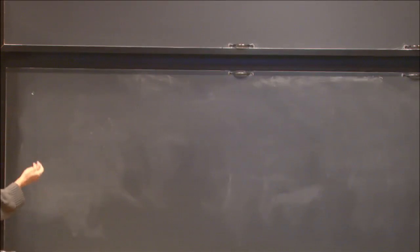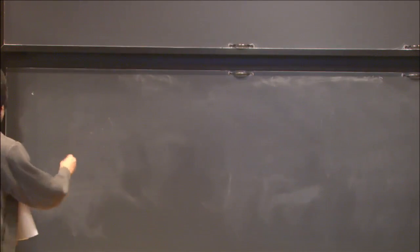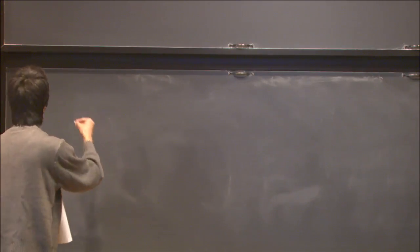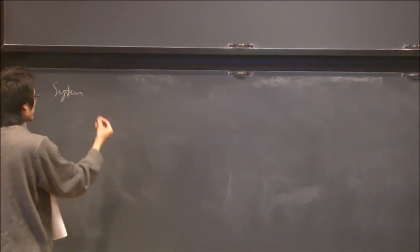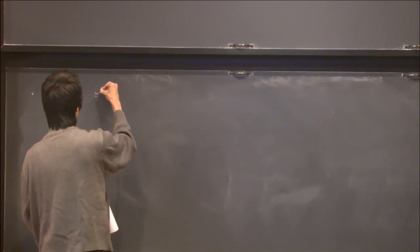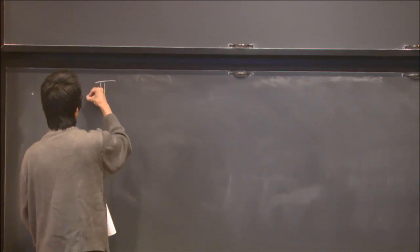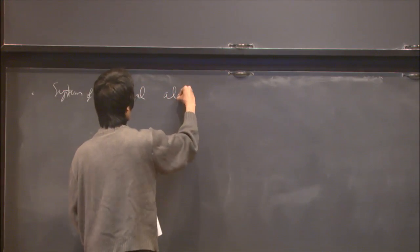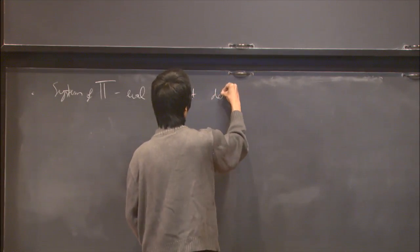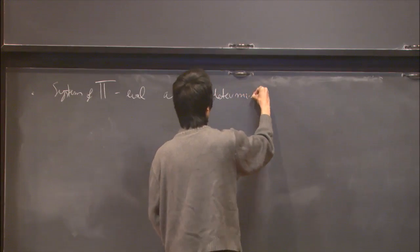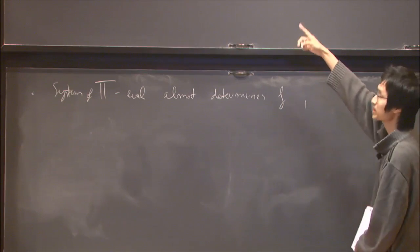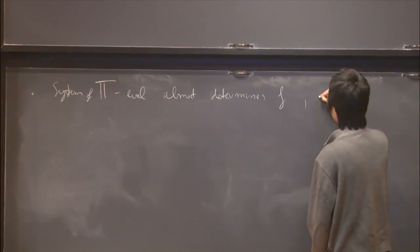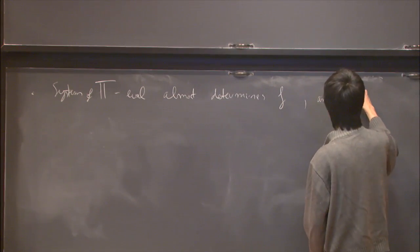So the phenomena, before I talk about the phenomena, what happens is that the system of Hecke eigenvalues of f essentially determines f. System of eigenvalues almost determines f in a precise sense. But what matters is that it always determines the weight k, and uniquely determines k.